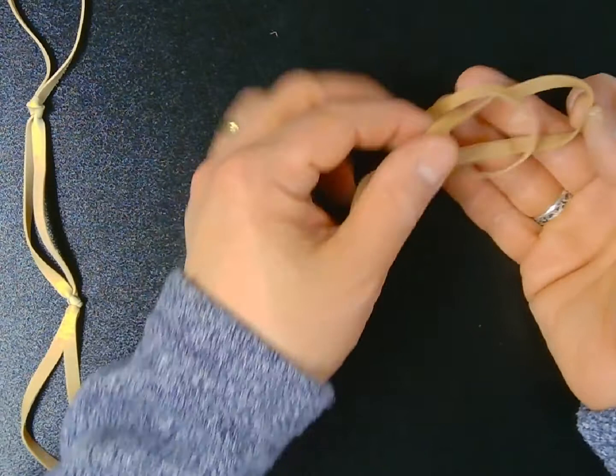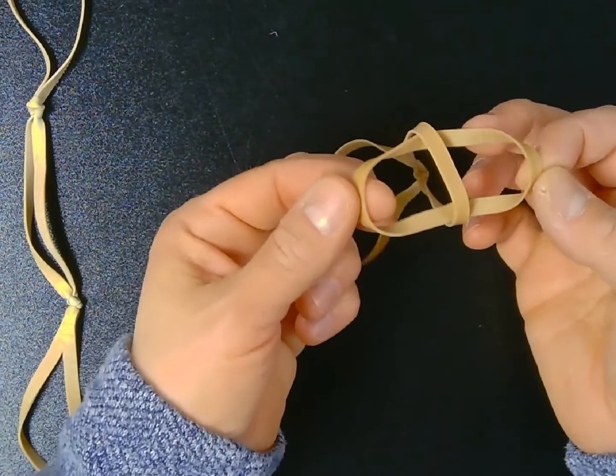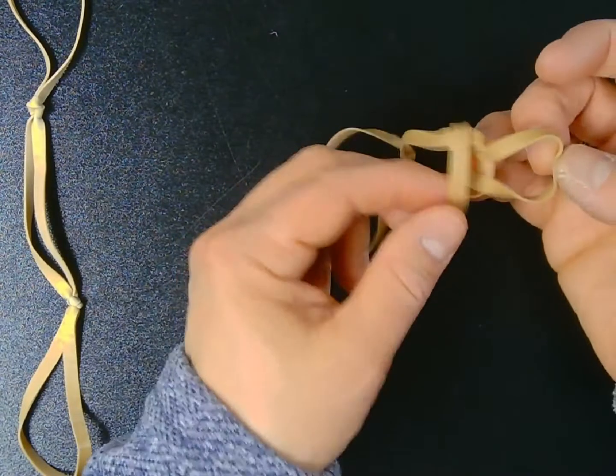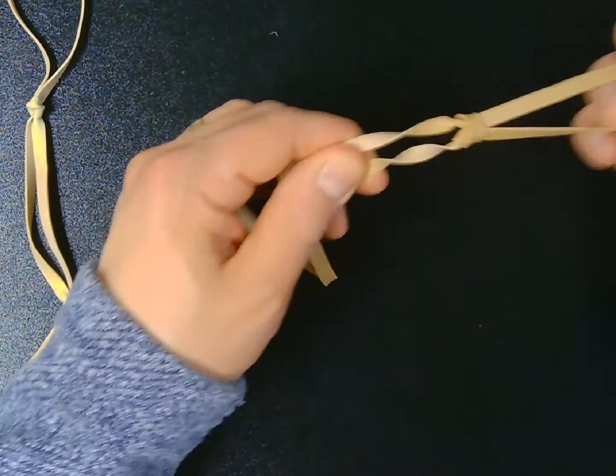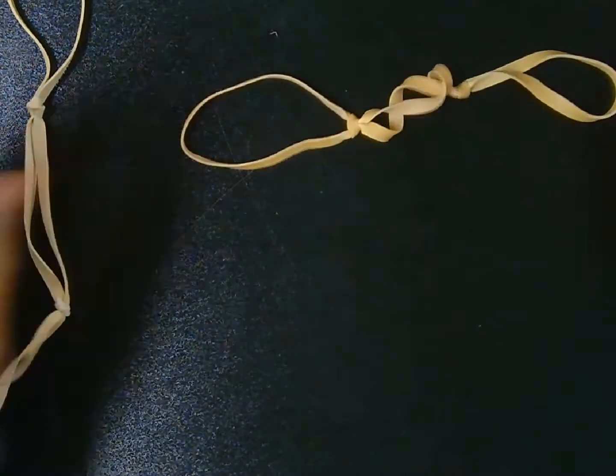So I've got a rubber band through the center of another. I'm taking one half of that rubber band and then I'm threading it through the other half. And then when I pull it tight, it creates a knot.